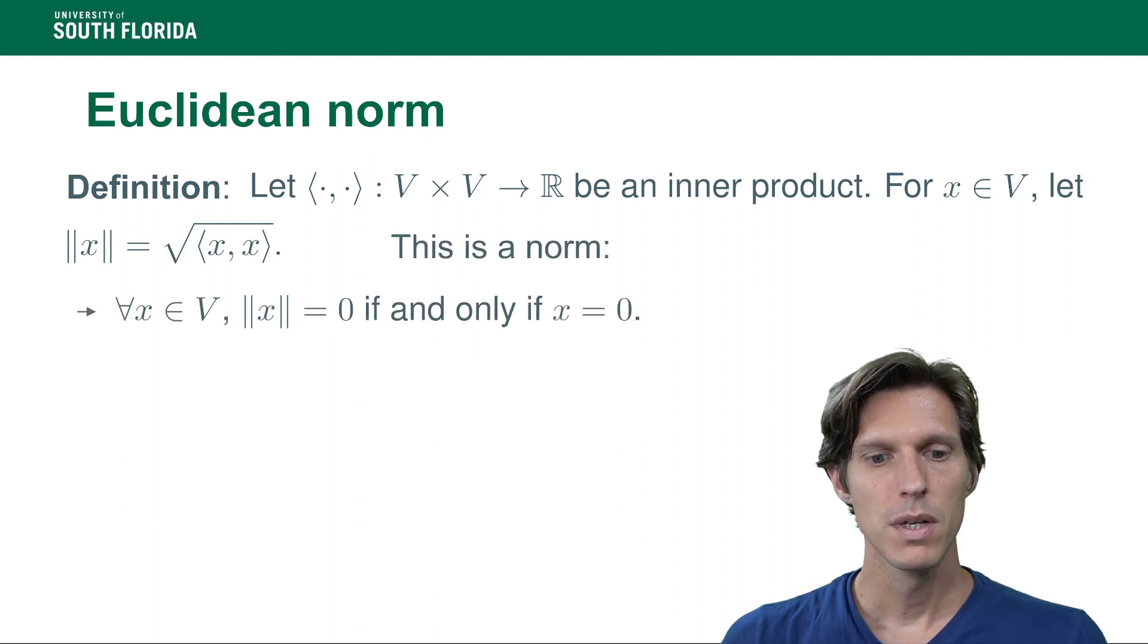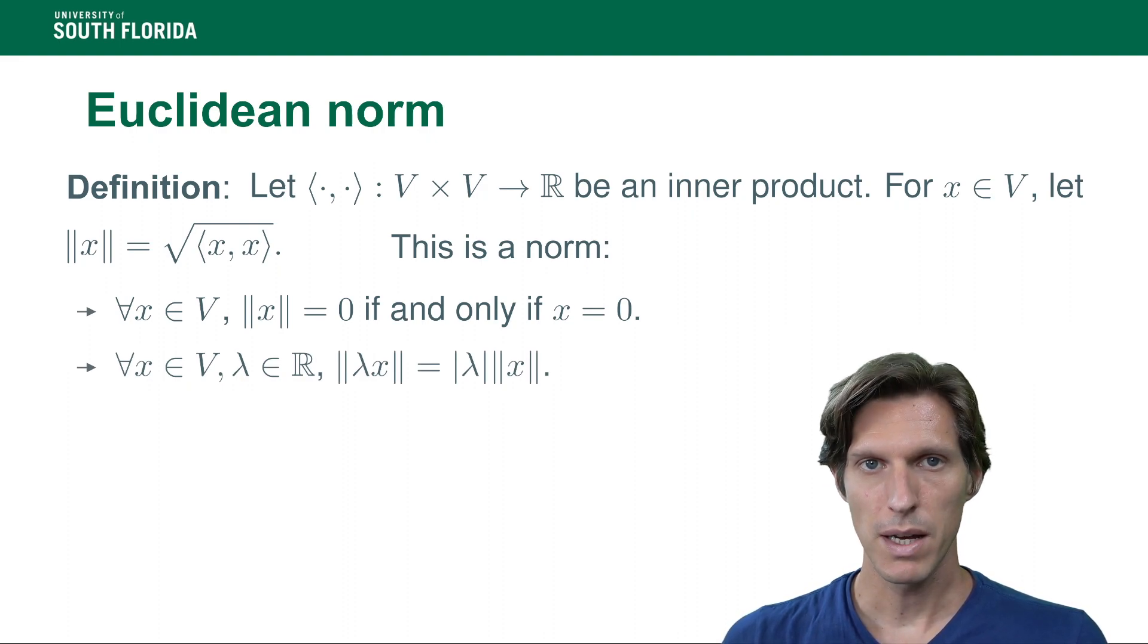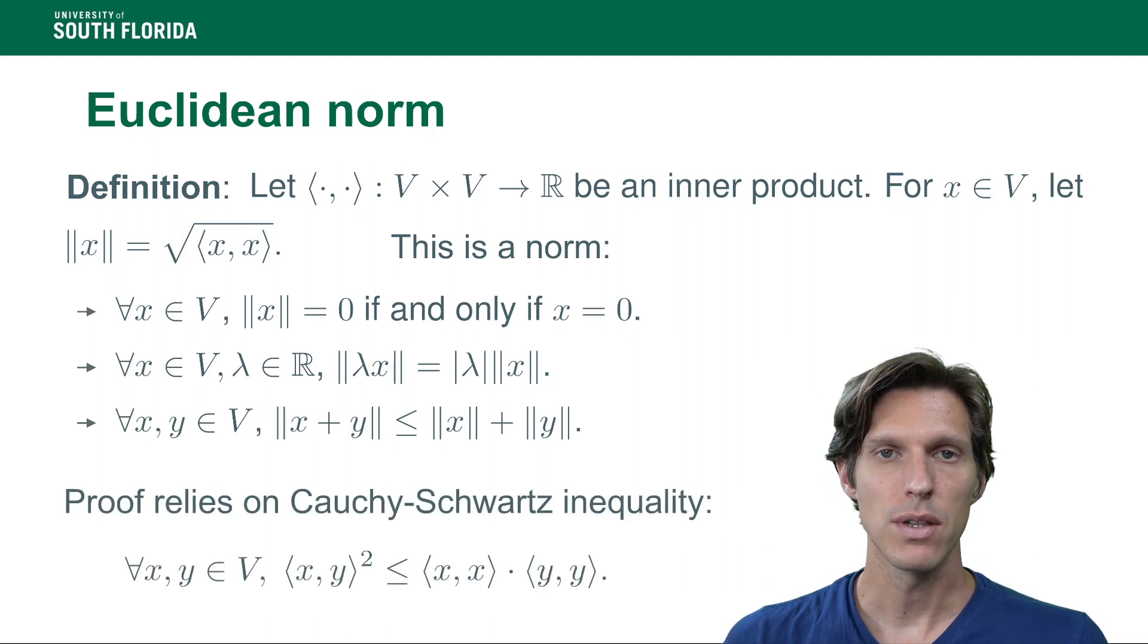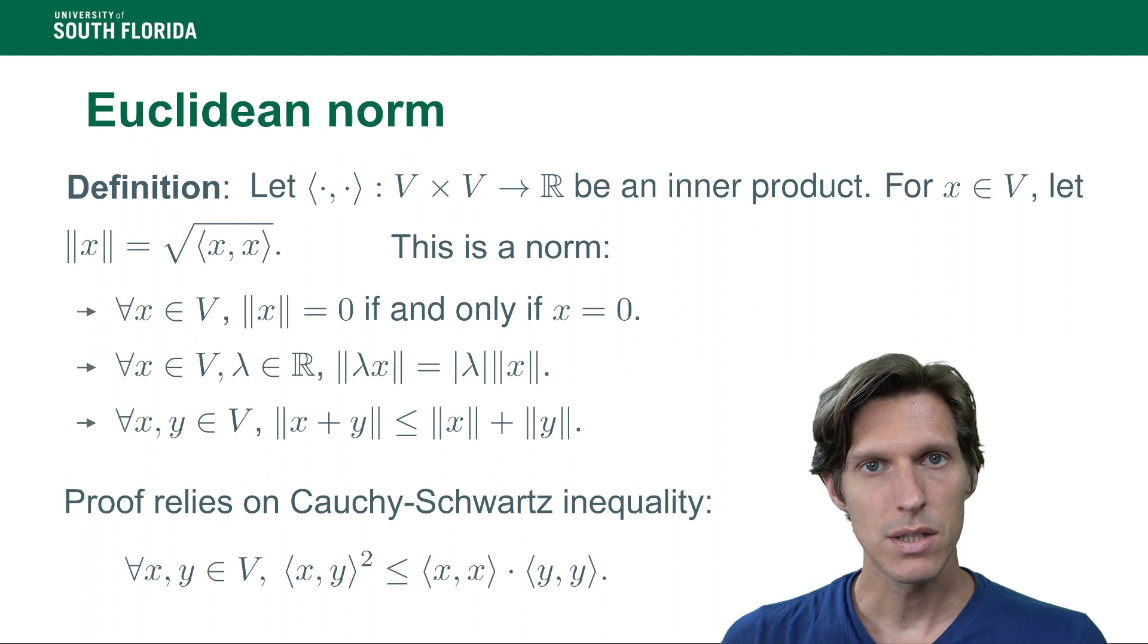It's a norm because ||x|| equals zero if and only if x equals zero. Multiplication by a scalar λ means multiplication of the norm by |λ|, and we have a triangular inequality. The proof of the latter is not completely trivial. It relies on the Cauchy-Schwarz inequality.